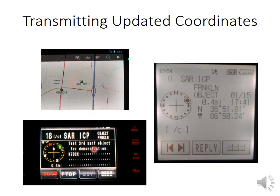Let's say this new point is the just-formed incident command post that didn't exist when searchers were dispatched. While traveling down the interstate, searchers received updated information via voice and APRS showing the ICP's coordinates. You see it displayed here on APRS Droid, which can be connected to a radio to graphically display what's received over the air. For a strictly radio-based solution, the Yaesu FTM-400 has received the third-party object. You don't need any searchers at the ICP — just someone with a radio capable of creating and transmitting third-party objects. The display shows comment information such as a point of contact's name, direction, and distance to that new point.